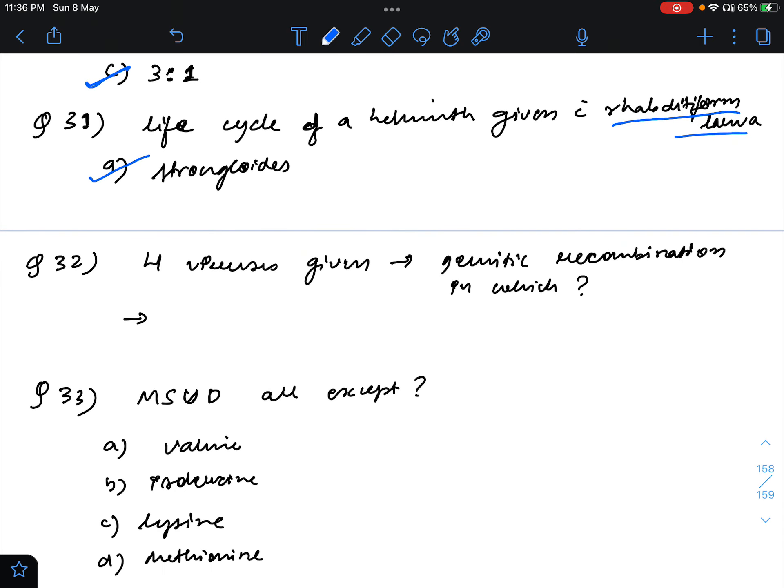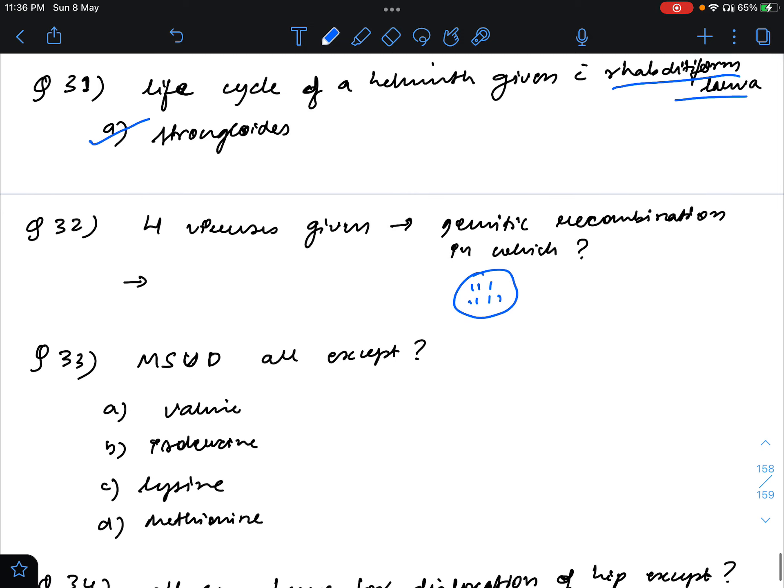Question 32: four viruses were given with different structures and they were asking genetic recombination will be seen in which. So basically, the concept for this is that whichever will have the segmented genome, that will have genetic recombination. Just like we have in case of influenza, so that will be the answer, the one that was having the segments.